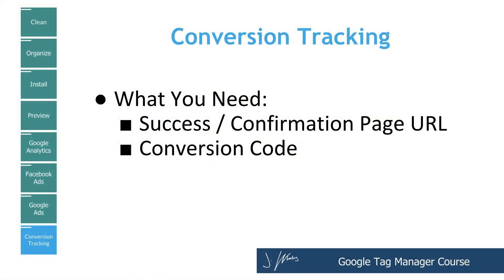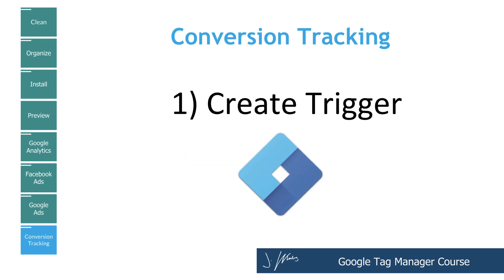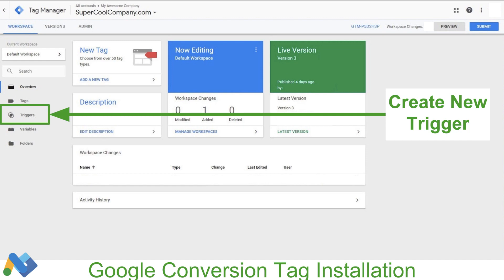There are only two things we need when we're doing our conversion tracking: we're going to need our success or confirmation URL, and our conversion code from whatever advertising platform we are using. In this particular example, we're going to be using Google Ads, but this will work with pretty much any platform. So our steps here: we're going to create the trigger, then we're going to create the conversion code, and then we're going to add the conversion tag to Google Tag Manager. The first step is to create a custom trigger inside of Google Tag Manager.